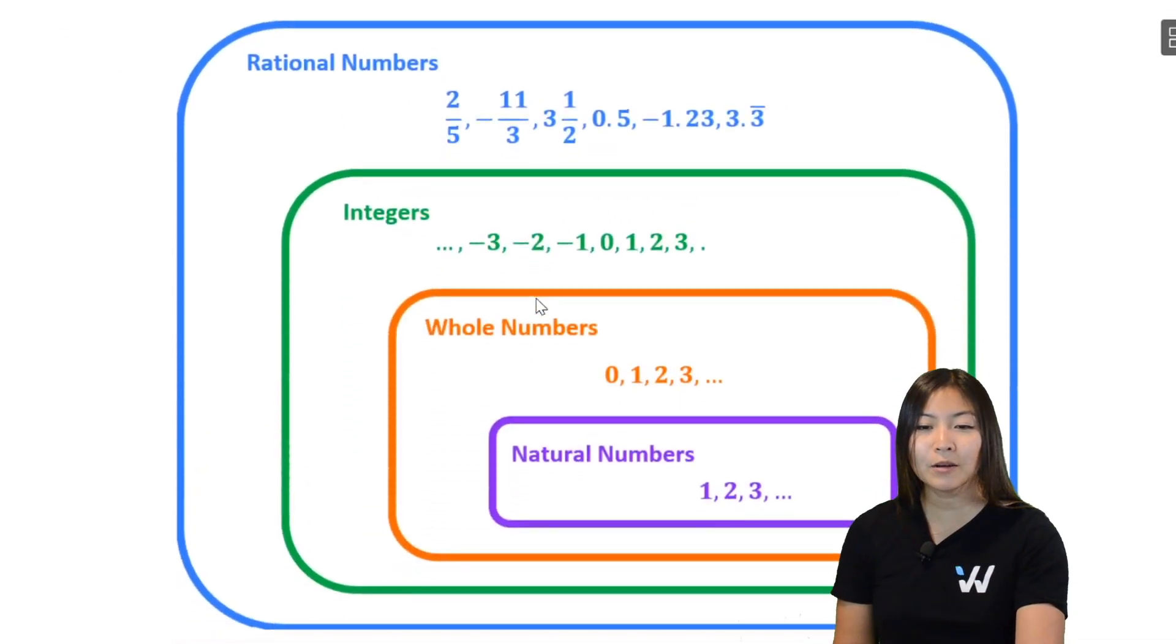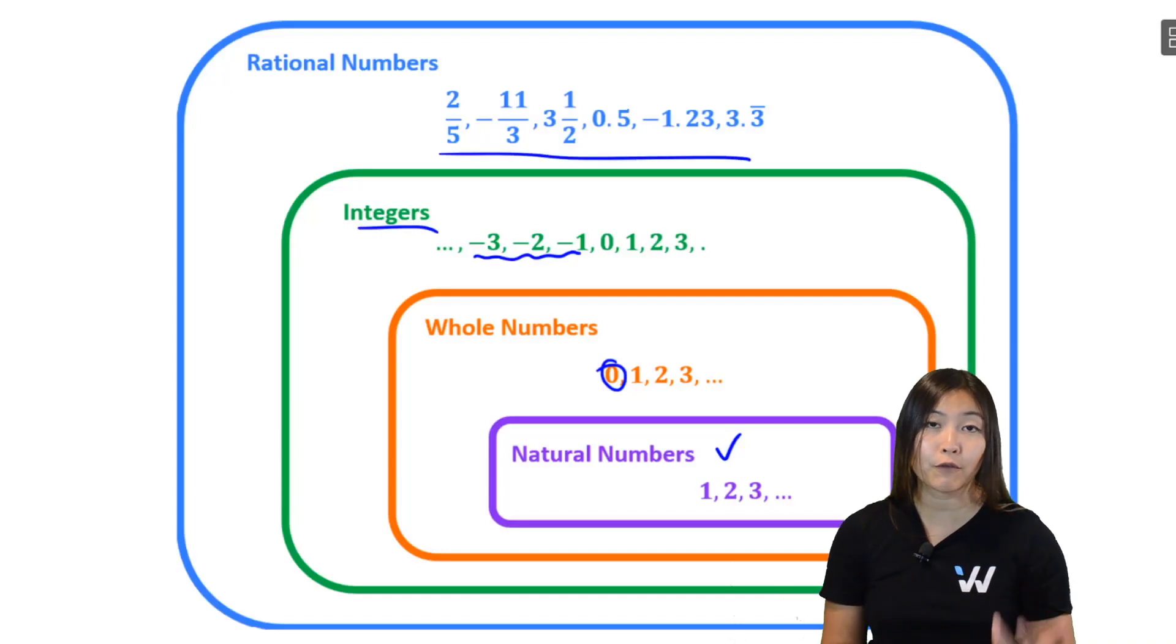I have this diagram down here just to show you the progression of numbers. We start with natural numbers 1, 2, 3, 4. Then we add on the 0, which gives us our whole numbers. Then we add on the negative integers, which give us the full set of integers. And finally, we add on anything that could be written as a fraction. And then we have our rational numbers.